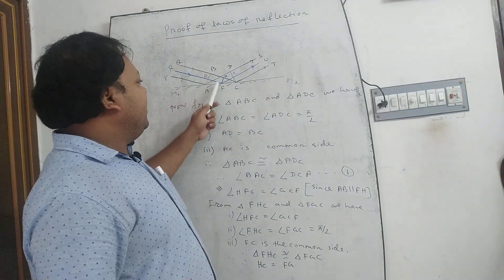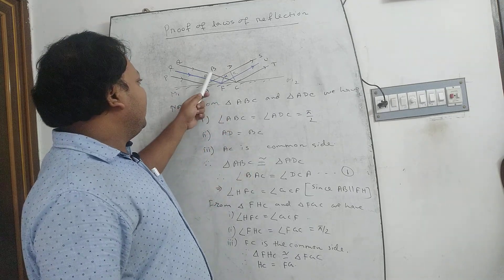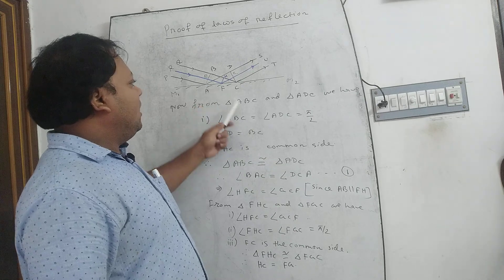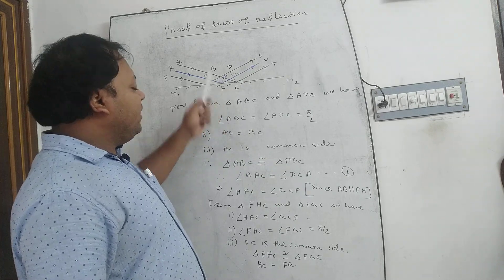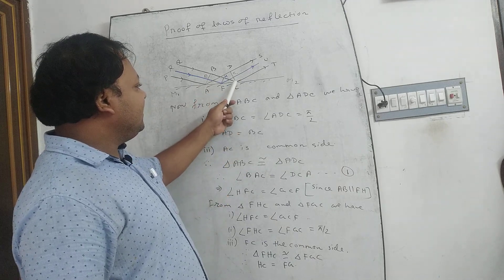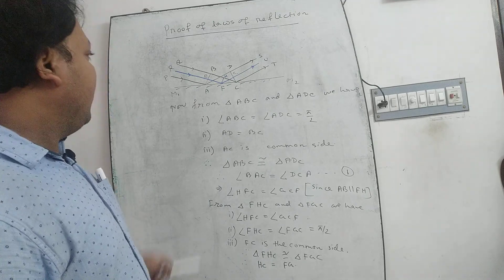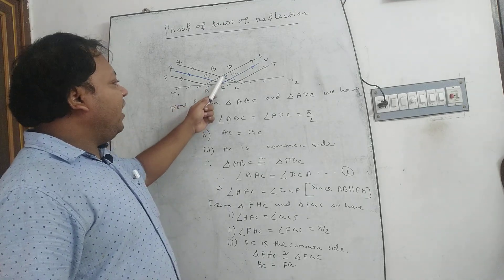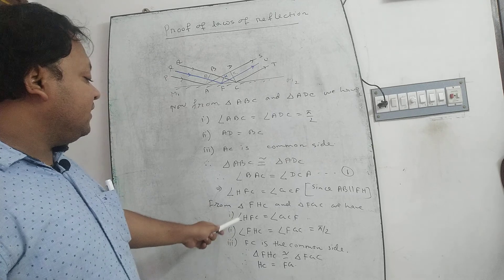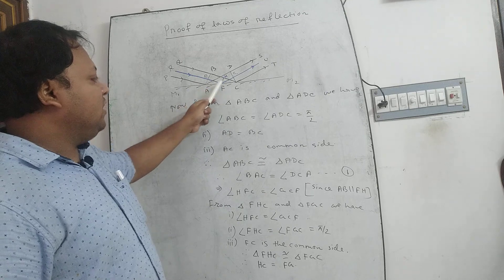Since AB is parallel to FH, we can write that angle BAC = angle HFC. And therefore, angle HFC = angle GCF. Since AB is parallel to FH, from triangles FHC and FGC, we have angle HFC = angle GCF, and angle FHC = angle CGF = 90°, since FH is normal to BC and GC is normal to CT.